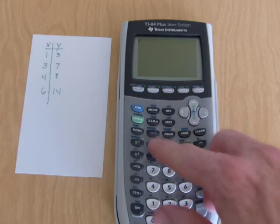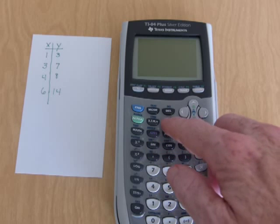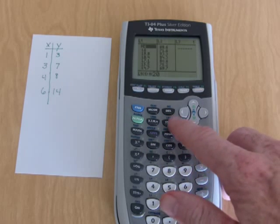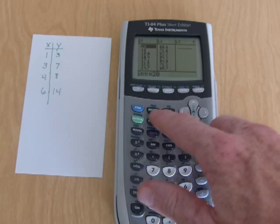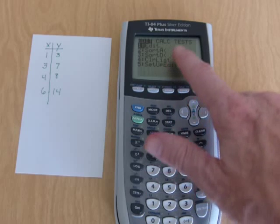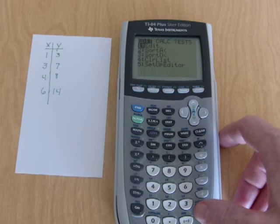The calculator is already on, so the first thing we're going to do is a stat plot. And so we're going to edit. I've hit stat. Let me start it again so you can see that. I hit stat. I'm going to choose number one up here, which is edit. All you have to do is hit enter.